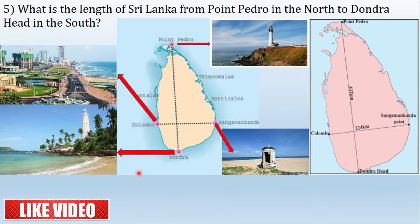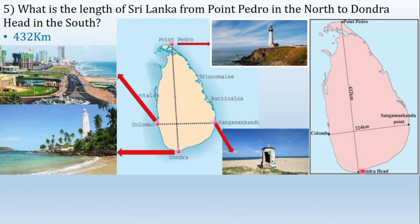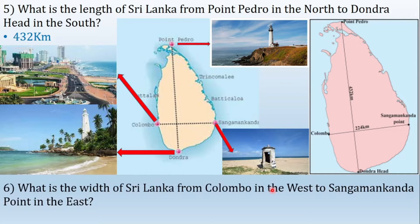What is the length of Sri Lanka from Point Pedro in the north to Dondra Head in the south? 432 kilometers. You see here — Point Pedro at this point, and Dondra Head here. If you draw a line from here to here, it measures 432 kilometers in length — that is the length of Sri Lanka. And the width of Sri Lanka from Kalambo in the west to Sangamankhandi point in the east? 224 kilometers — that is the width of Sri Lanka.